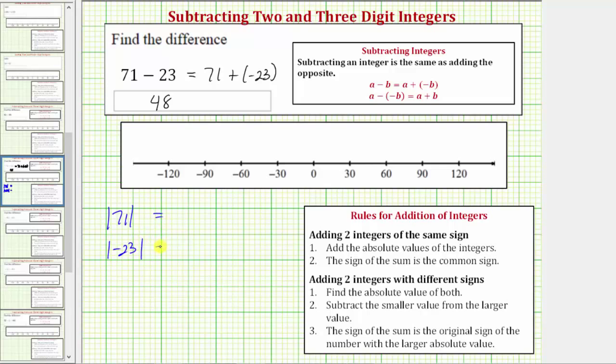The absolute value of a number is a number's distance from zero, and distance is always positive. So the absolute value of positive 71 is positive 71. The absolute value of negative 23 is positive 23. Step two, we subtract the smaller value from the larger value. So we have 71 minus 23, subtracting. We have 48.